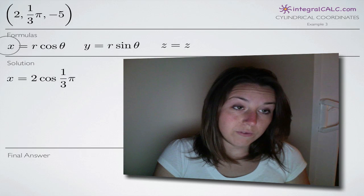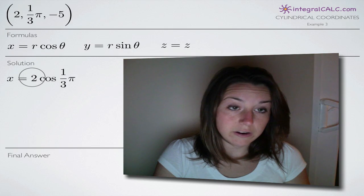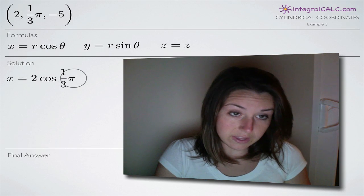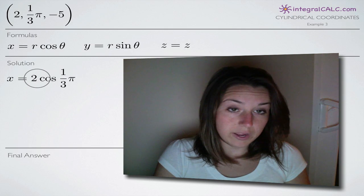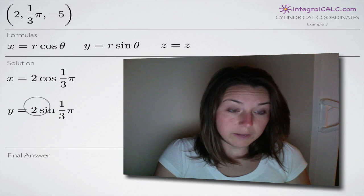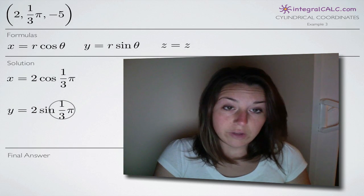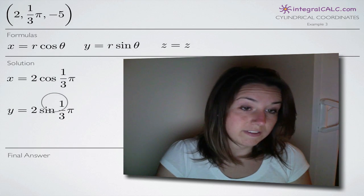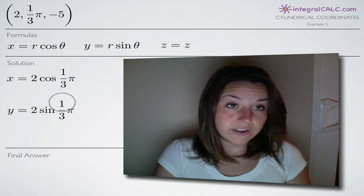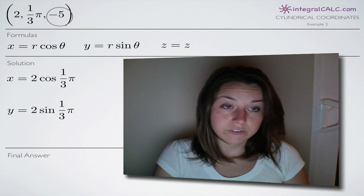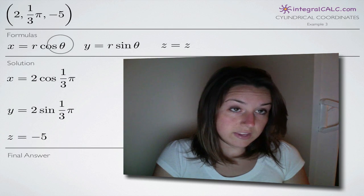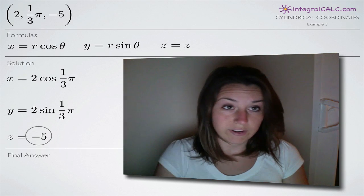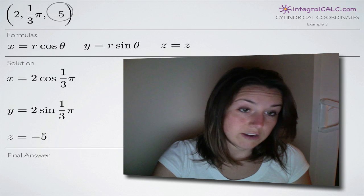When solving for the x coordinate, we're going to plug in 2 for r and pi over 3 for theta. For the y coordinate, we again plug in 2 for r and pi over 3 for theta, giving us 2 sine of pi over 3. To find the z coordinate, we plug in negative 5 for z — so z in our rectangular coordinate also equals negative 5. It's the same in both cylindrical and rectangular coordinates.